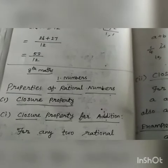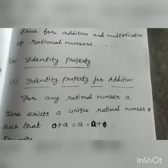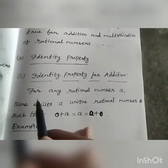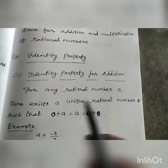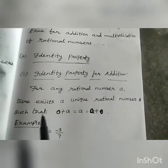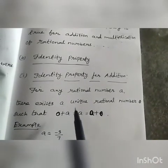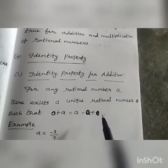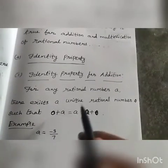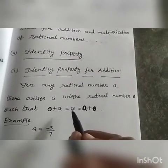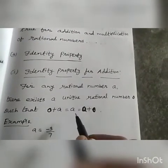The 4th property is the identity property. Now we see the identity property for addition. For any rational number A, there exists a unique rational number 0, such that 0 + A = A = A + 0. So we take any rational number A and add 0, and we will get the same rational number A only.